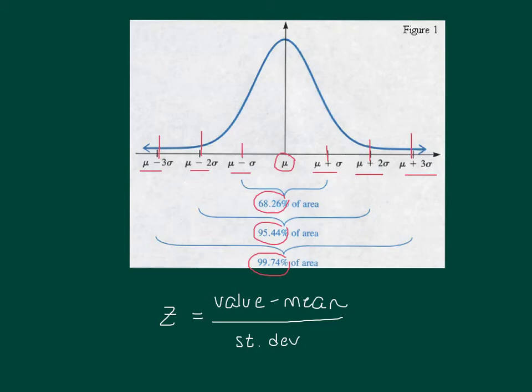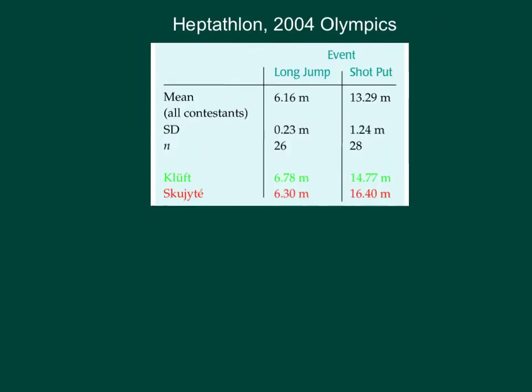On the next slide, I'll give you an example with specific values. This chart shows information from the 2004 Olympics, specifically the heptathlon, which is a track and field competition of seven events that female athletes compete in. This chart shows the long jump and the shot put, with their average values of 6.16 and 13.29, the standard deviation, and how many women competed in each event.